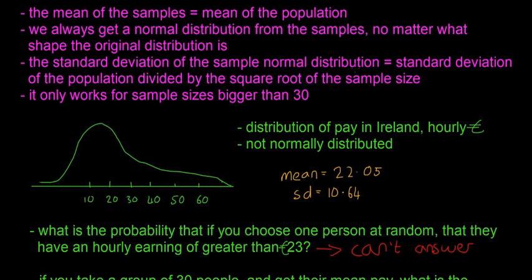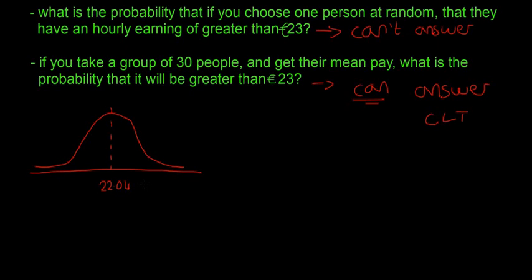Also, we know that the standard deviation of the sample normal distribution equals the standard deviation of the population divided by the square root of the sample size. On both sides, we have a standard deviation, which is sigma_x. We know that sigma_x equals sigma divided by the square root of n.